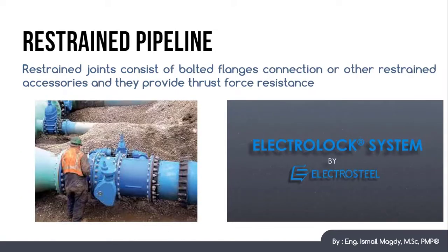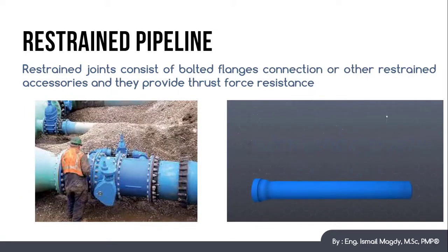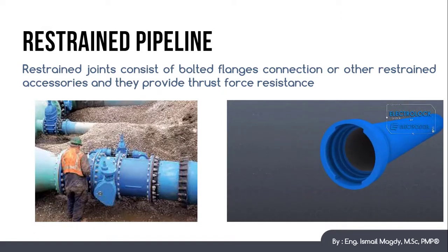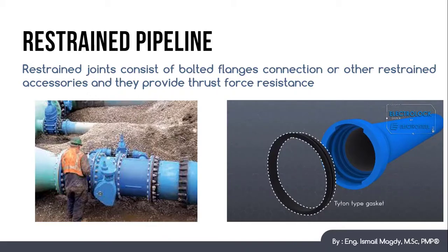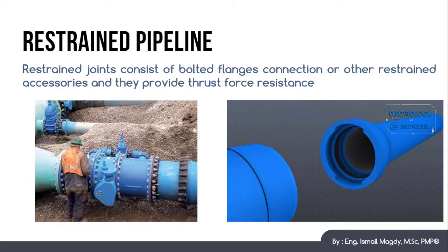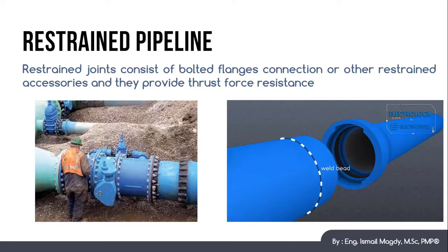On the other hand, restrained joints provide resistance against thrust force. They could consist of bolted flanges, as we can see in the photo on the left, or they could consist of socket and spigot ends too, but with a specific set of accessories to ensure restraining the joints together, as we can see in the photo on the right.